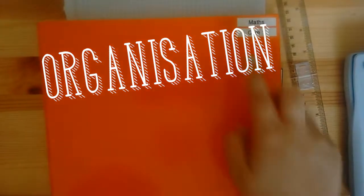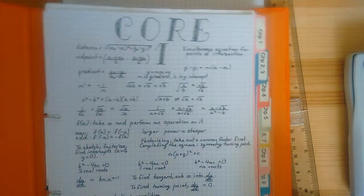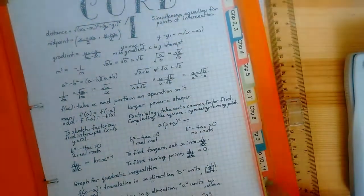So step one, as for any subject, is organisation. So this is my Core 1 folder, which is the exam I've got on Wednesday. I use the label maker, but you could just use washi tape or even a little bit of paper with some sticky tape over it once you've written on it. And I labelled my folders on the spine of it, and on the front, top right corner. Then I have my dividers labelled also, for each chapter that we studied.